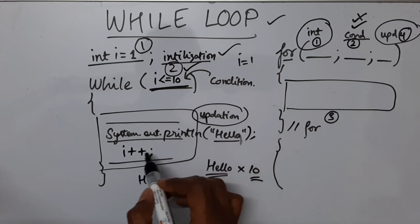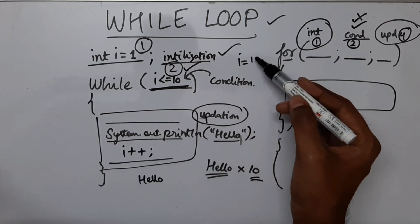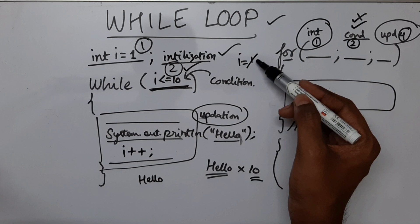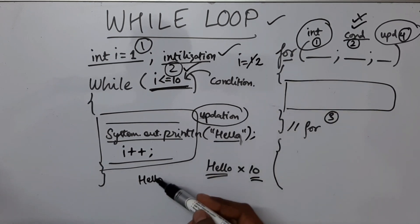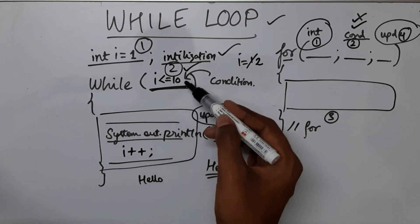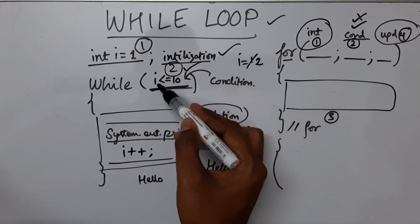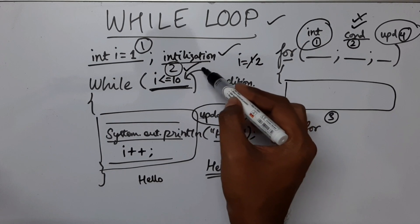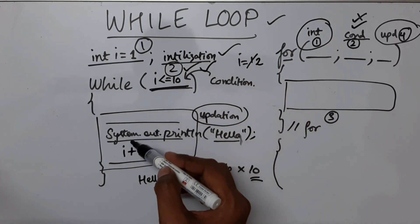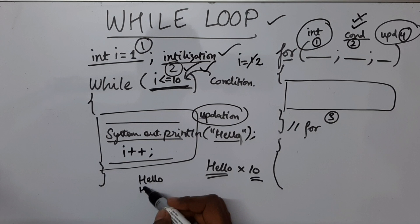After printing, it is telling i++. So i has been updated and now it is 2. Now from this updation, it will come and check the condition. So now 2, since it is less than equal to 10, again the condition is passed and it will come inside the body. It is going to print hello.